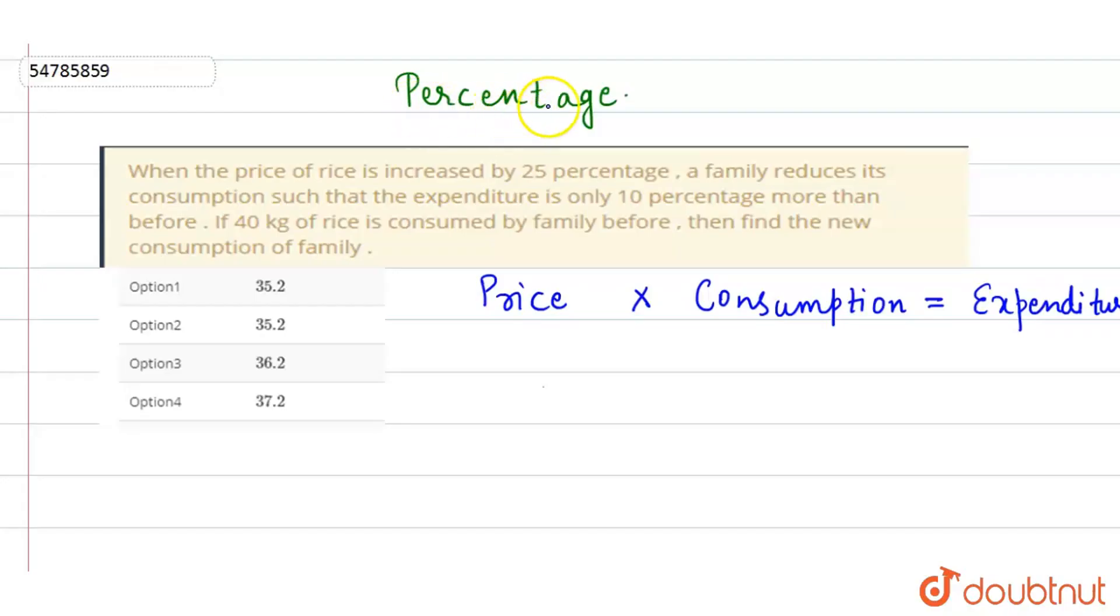Hi friends, we have to do a percentage-based problem. Look at the question. When the price of rice is increased by 25%, a family reduces its consumption such that the expenditure is only 10% more than before. If 40 kg of rice is consumed by family before, then find the new consumption of family.